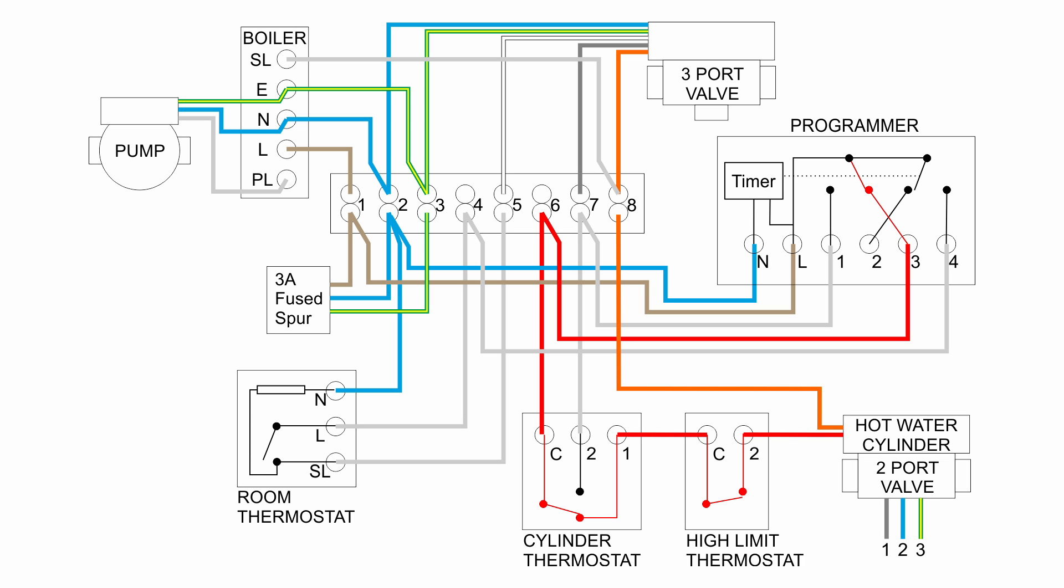And then that goes into the two port valve. This will activate the valve motor and open the valve. And then when the valve has actually opened, a switch inside the valve will then connect the orange wire coming out of there to the live input. And that's what goes back to terminal 8 in the wiring centre and turns on the boiler, just as we had previously.